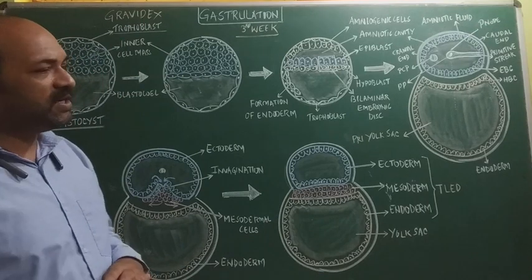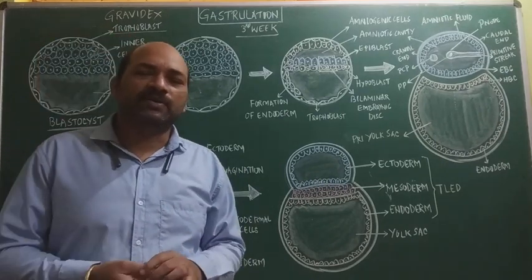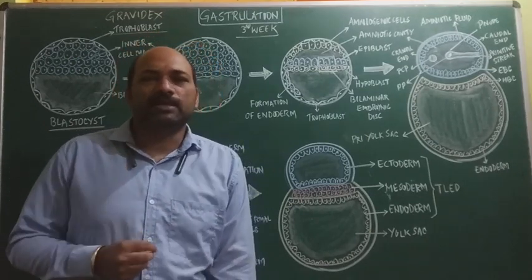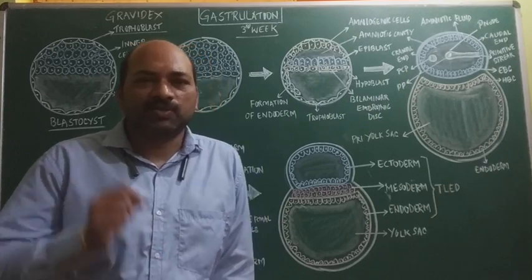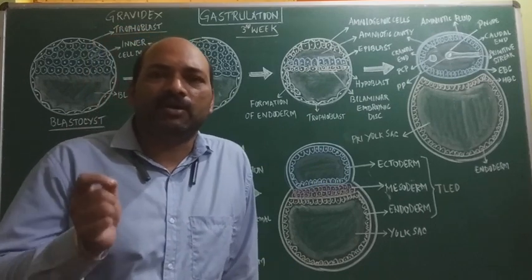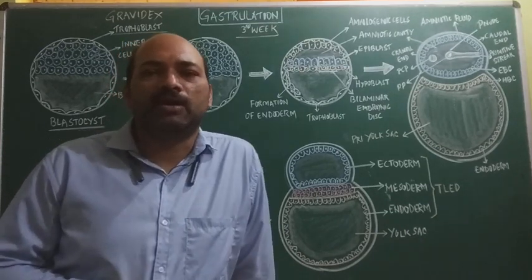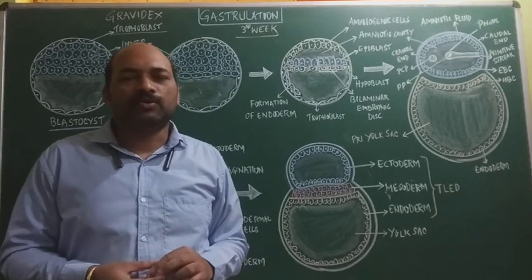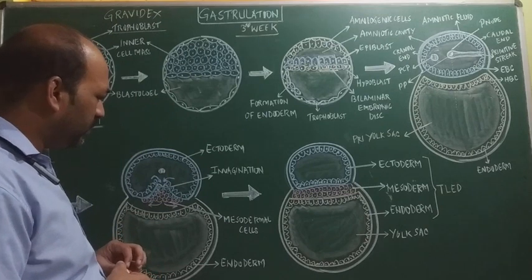Considering embryonic development in diploblastic versus triploblastic animals: diploblastic animals during the gastrula stage consist of two germ layers — endoderm and ectoderm — lacking mesoderm, and are referred to as having a bilaminar embryonic disc. Triploblastic animals have a trilaminar embryonic disc consisting of three germ layers: endoderm, ectoderm, and mesoderm.